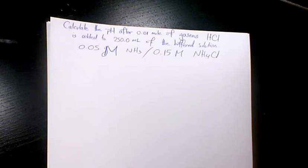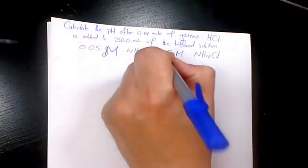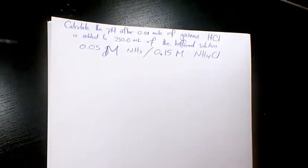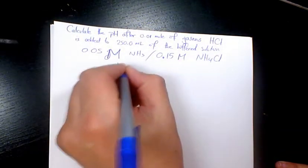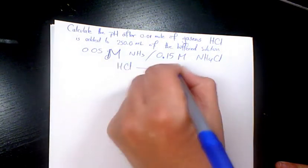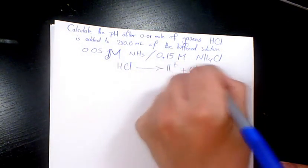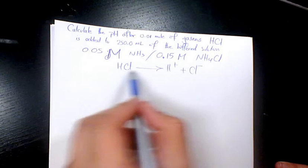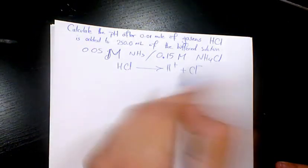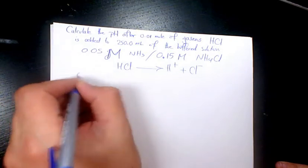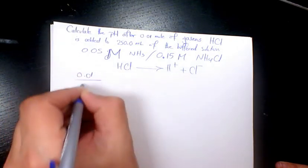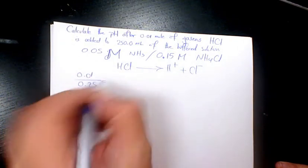HCl is a strong acid and dissociates completely, so the concentration of HCl equals the concentration of proton, which is 0.01 divided by 0.25 liters. That would be 0.04 molar.